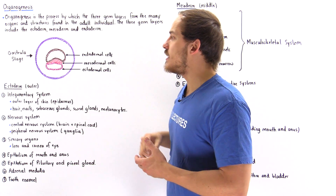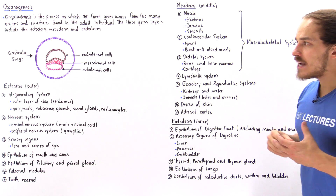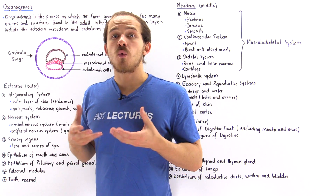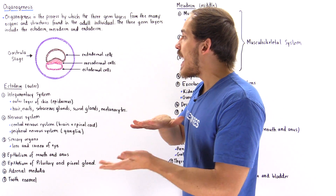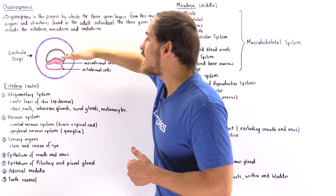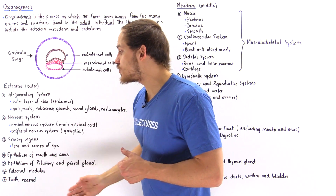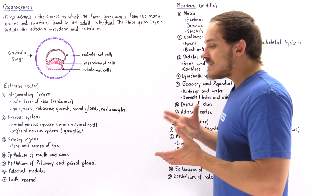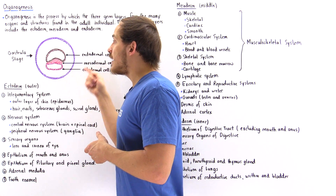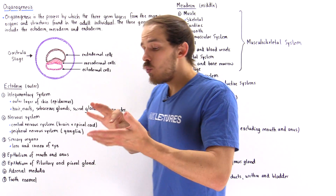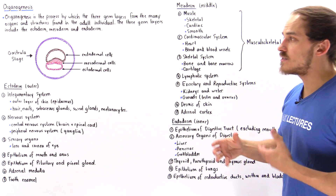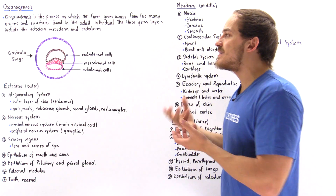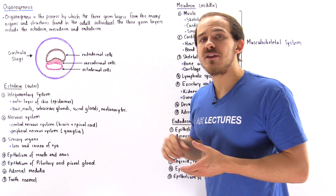The ectoderm also forms different structures found inside the developing embryo. How do cells initially on the outer portion eventually form internal structures? Embryological development is a complicated process involving not only cell differentiation, growth, and proliferation, but also extensive cell movement and rearrangement inside the developing embryo.